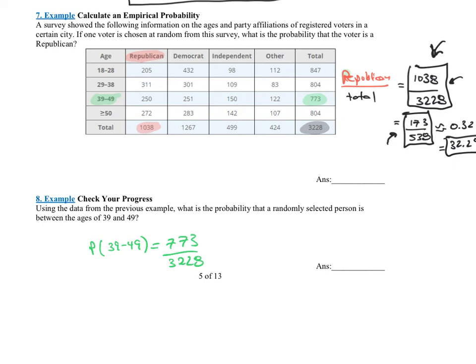Again, this doesn't tell me which way to write my answer. I should presume that they want a simplified fraction. Again, in real-world examples, I do not like simplified fractions. This tells me a story. 773 of the 3,228 people in the city were between the ages of 39 and 49.